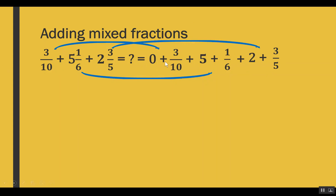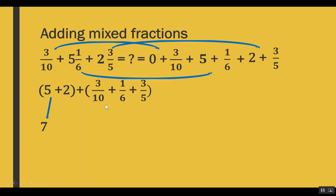Now we group the whole numbers and the proper fractions. The whole numbers give us 0 plus 5 plus 2 — we can ignore 0 — and the proper fractions give us 3 out of 10 plus 1 out of 6 plus 3 out of 5. Adding the whole numbers: 5 plus 2 equals 7. Since the fractions have different denominators, we take the LCM of 5, 6, and 10, which is 30.